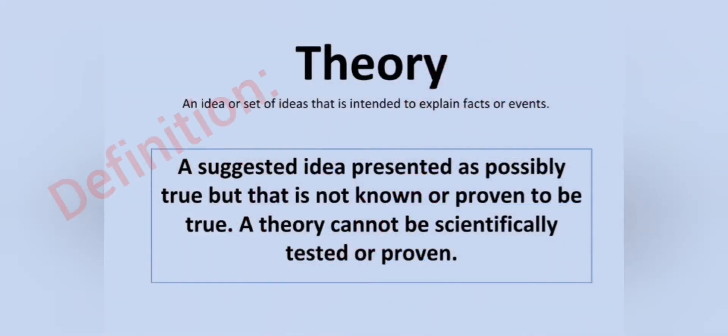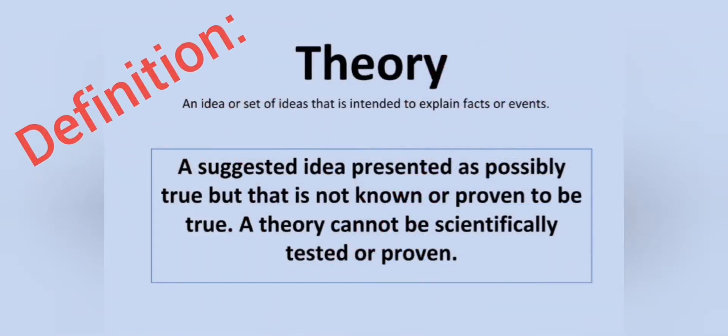A theory is an idea or a set of ideas that is intended to explain facts or events — a suggested idea presented as possibly true, but that is not known or proven to be true. The most important thing about a theory is that you cannot prove it scientifically.